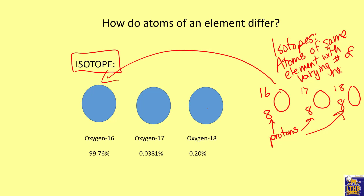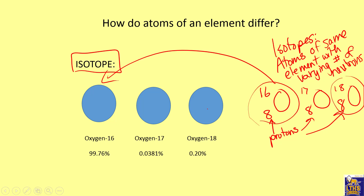Oxygen-18 is the heaviest isotope listed and oxygen-16 is the lightest. The percentages tell you how common each isotope is. If you had oxygen in a balloon, most of those atoms would be oxygen-16, some would be oxygen-17, and some would be oxygen-18.